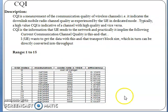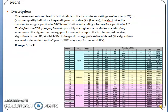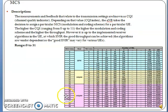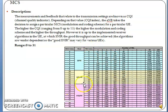MCS — Modulation and Coding Scheme — has a range of 0 to 31, with 0 to 28 actively used. MCS 0 to 9 gives QPSK modulation, 10 to 16 gives 16QAM modulation, and 17 to 28 gives 64QAM modulation. The number of RBs allocated increases with higher MCS index — more RBs means more throughput. The TBS (Transport Block Size) index is also assigned according to the MCS index, which determines the number of RBs allocated.